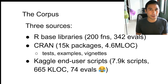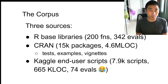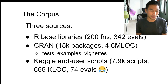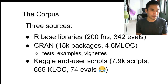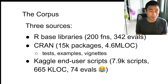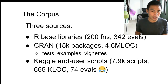There are three sources for their corpus: the R base library, which is small but fundamental; CRAN, with 15,000 packages and 4.66 million lines of code including tests, examples, and vignettes; and Kaggle end-user scripts — 7,900 scripts with 665,000 lines of code. The Kaggle data had only 74 eval calls, so while it's worth mentioning, it didn't work out that well. Sometimes it's good to include negative results.